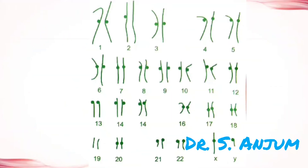Here you can see there are 23 pairs of chromosomes, but the last pair represents X and Y. The Y chromosome is shorter as compared to the X chromosome.